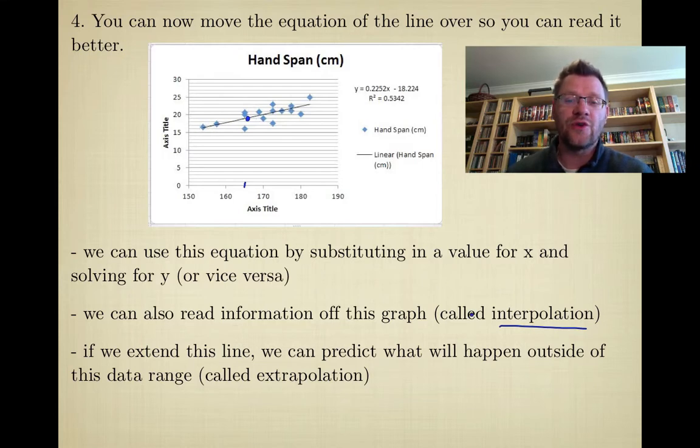But if you were to extend this line either this way or that way, then you're going to be using this trend of data to make some assumptions about what's going to happen for people with heights that we haven't actually measured, and that's called extrapolation. That's when you predict what happens outside of your data range.